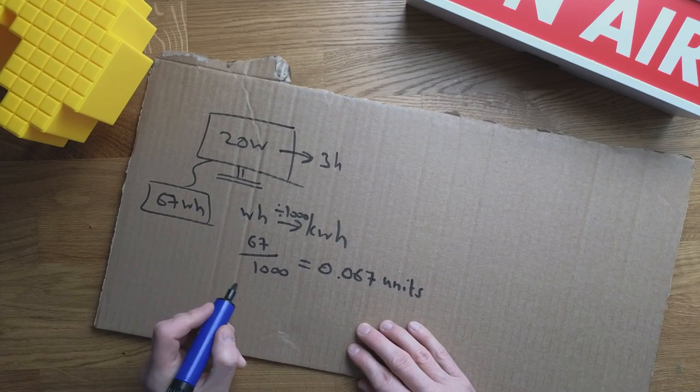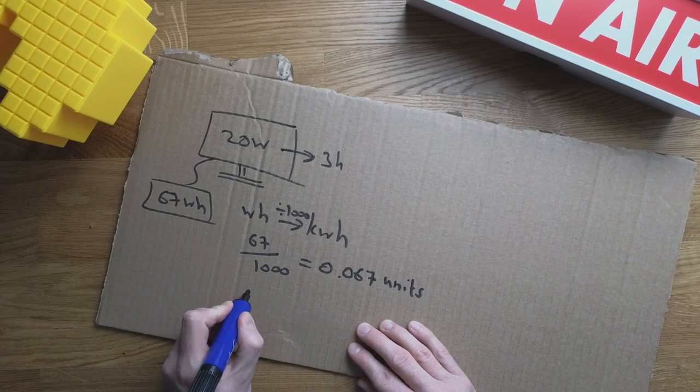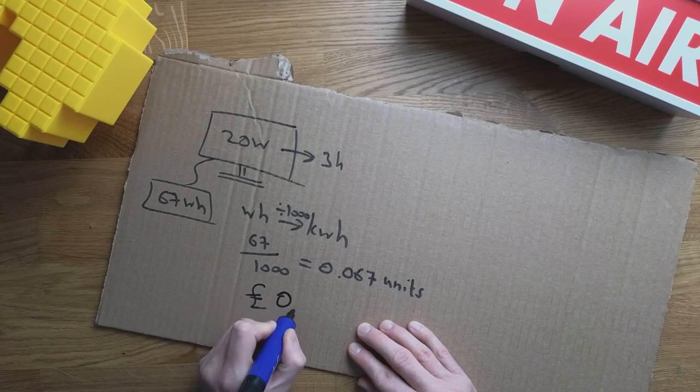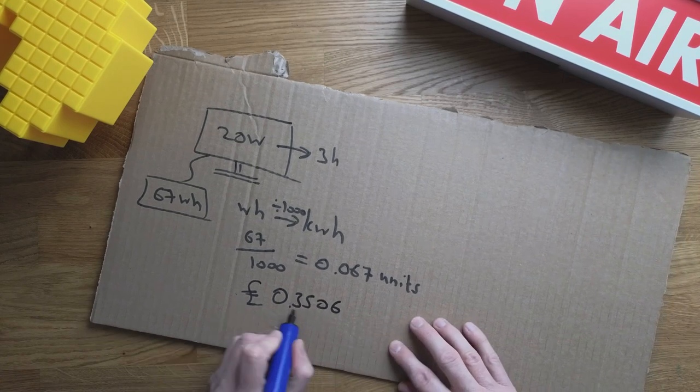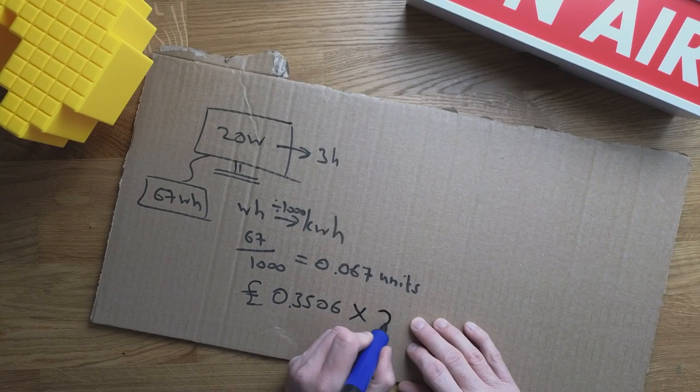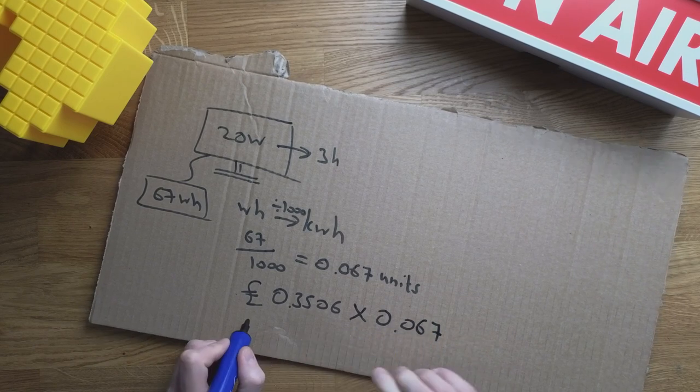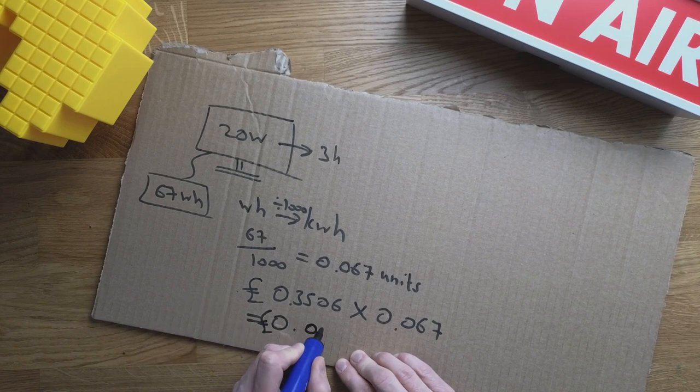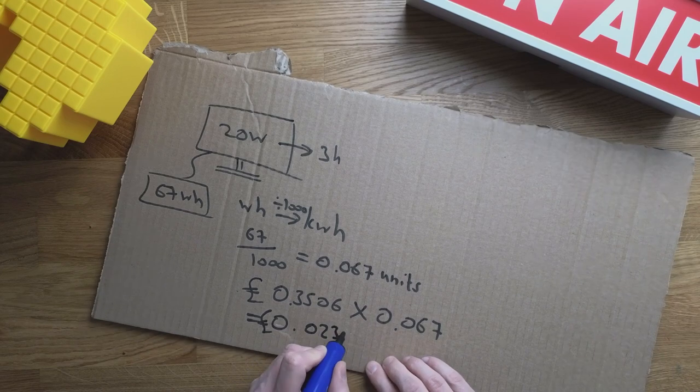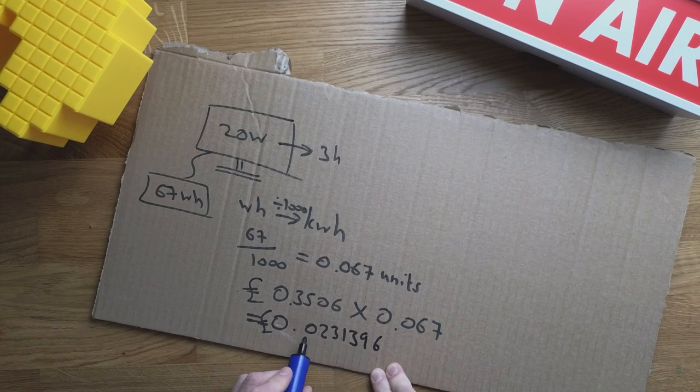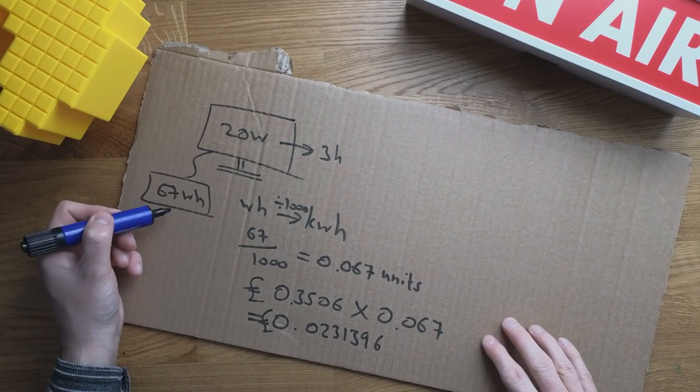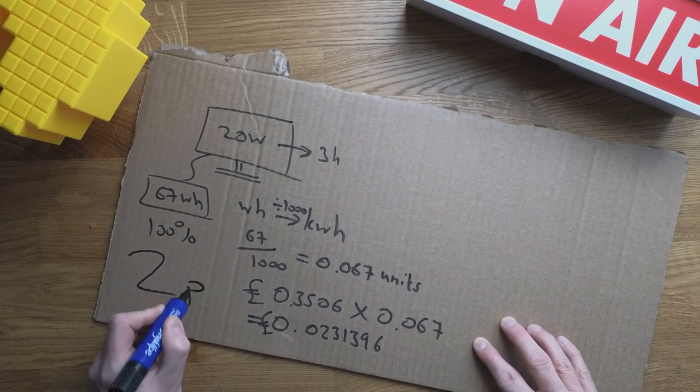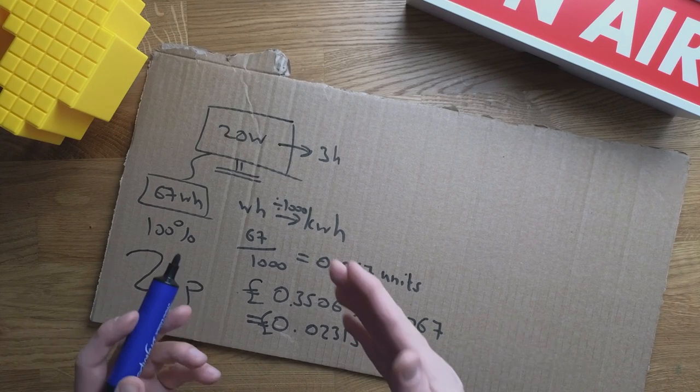For three hours, it would cost me that in terms of units. Let's multiply that by what it's going to cost someone in the UK. I'm going to use the normal rate, which is 35.06 pence. I'm going to convert that into pounds, so 0.3506. That's the cost in pounds of one unit times 0.67, the number of units. That comes out as 0.0231396 pounds. So that's two pence. By charging this to 100% using solar power, I save two pence.